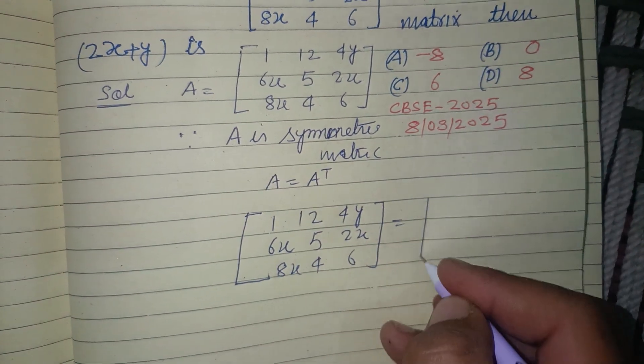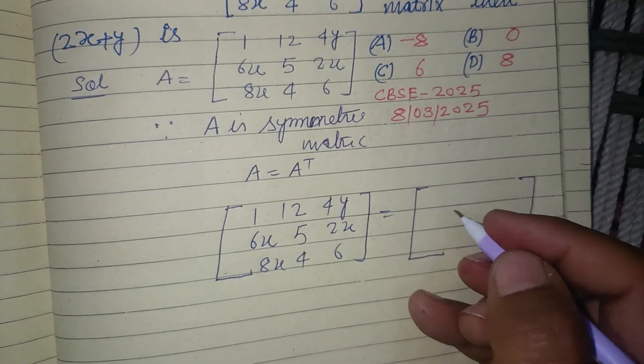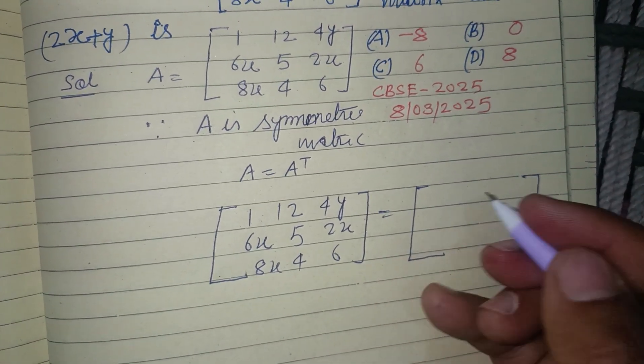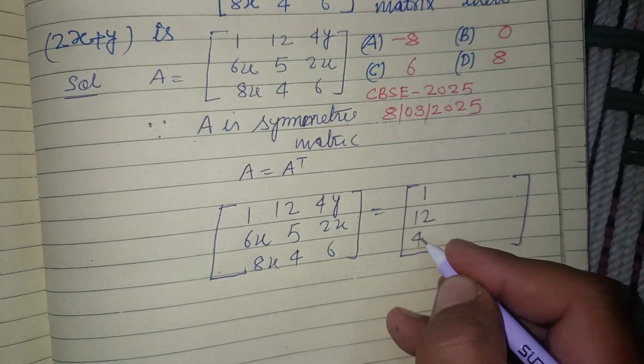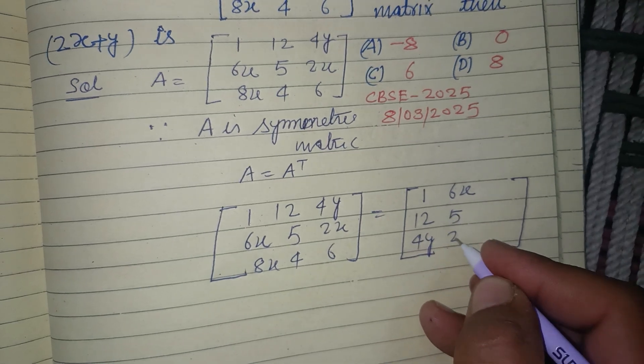and transpose is obtained by changing its rows and columns, interchanging the row and column. So this is [1, 12, 4y; 6x, 5, 2x;